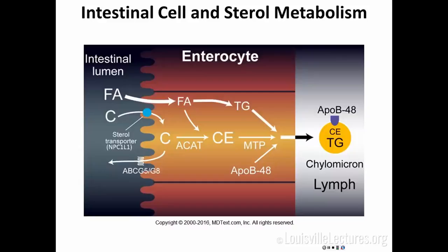The cholesterol ester that is made has to be packaged into a chylomicron. ApoB48 is the protein of the chylomicrons, but you also need a transport protein called MTP, which puts cholesterol ester into the chylomicron. A mutation of MTP causes a disorder called abetalipoproteinemia — in those patients, you do not have any chylomicrons. These disorders are present due to defects in the transport of cholesterol from the intestinal lumen into the blood.